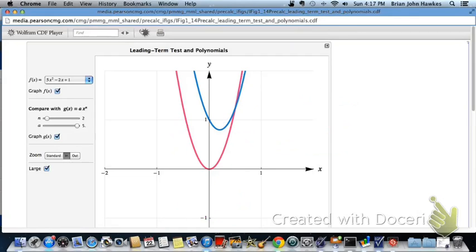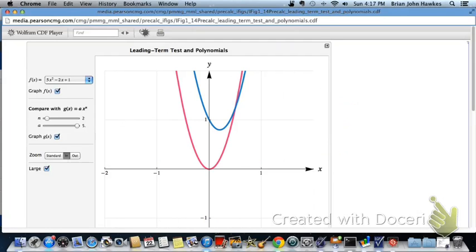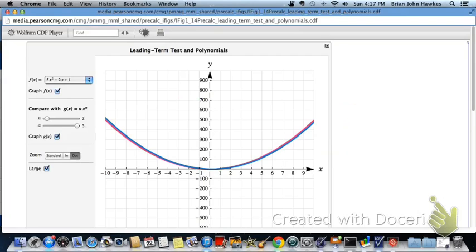Okay time in now. The end behavior again we're not concerned about the middle here. We're going to zoom out and when we zoom out we see that the graphs are virtually identical when we look at the graphs from a perspective that's much farther away than zooming way in. So when we zoom in we see they're different but when we zoom out we see that they are the same.